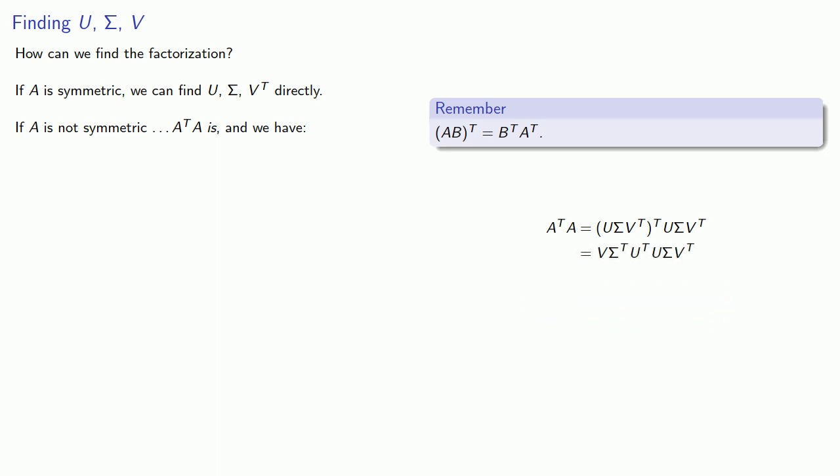Next, remember that U and V are supposed to correspond to rotations, and in that case the transpose is the inverse. Which means this product U^T U is just the identity. And so our product simplifies.